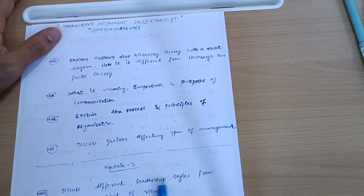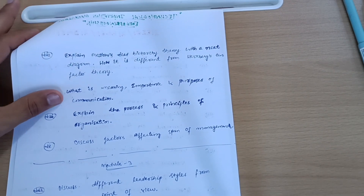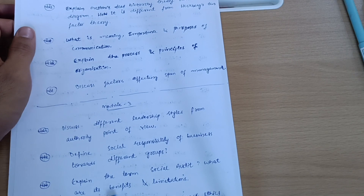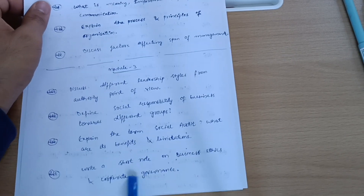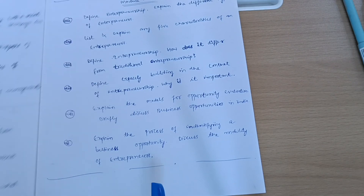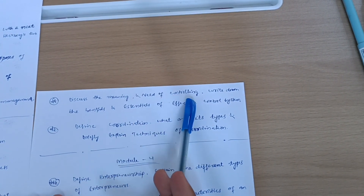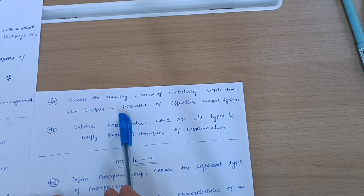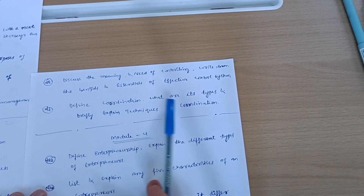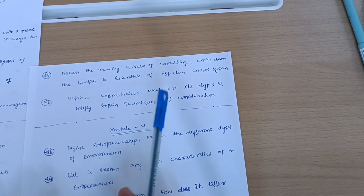From Module 3, the important questions are: discuss different leadership styles from an authority point of view; define social responsibility of business towards different groups; explain the term social audit along with its benefits and limitations; write a short note on business ethics and corporate governance; discuss the meaning and need for controlling and write the benefits and essentials of an effective control system; and define coordination, its types, and briefly explain techniques of coordination.